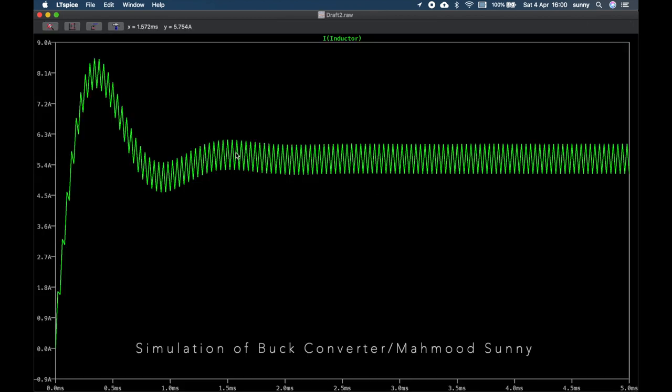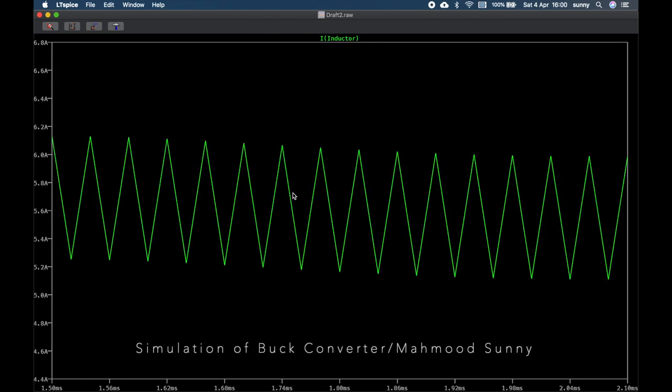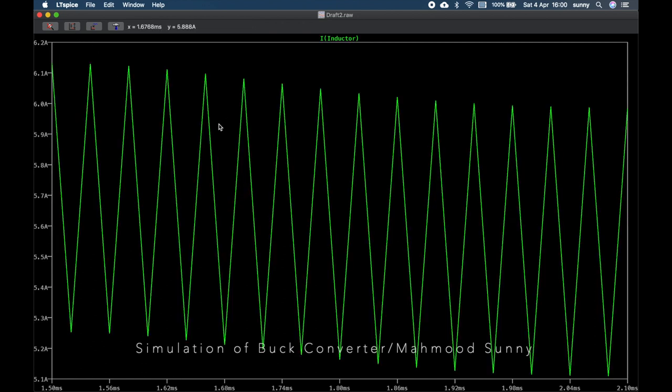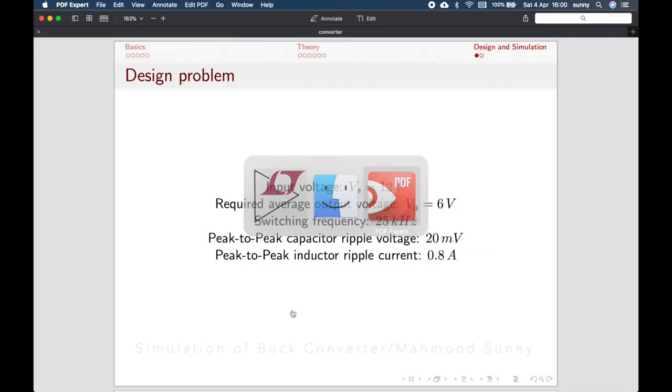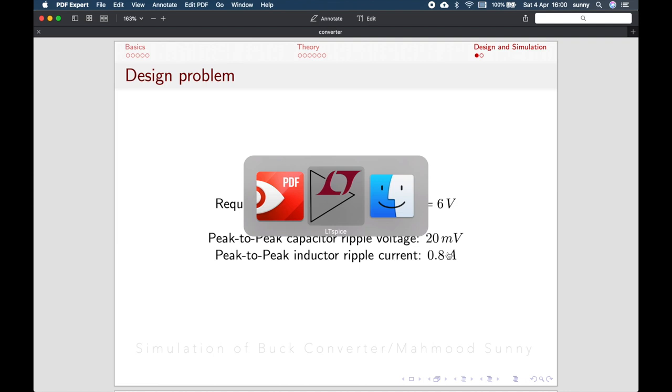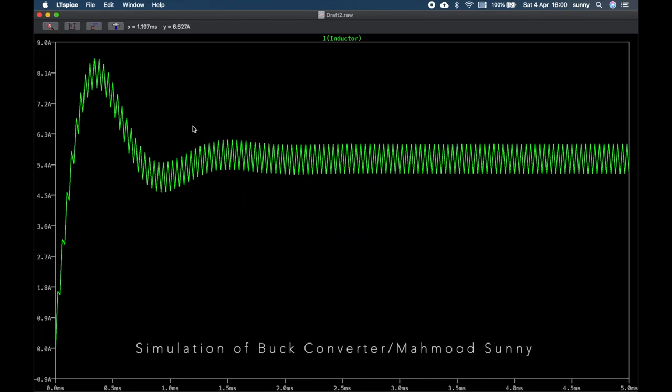This is a pretty good curve. We can check the delta I from here. We can zoom it a little bit and then press it here. Now, we can check the delta. The delta is almost 900 milliampere. From our calculation, the peak-to-peak inductor ripple current was 800 milliampere. But, in our simulation, we are getting a little bit more.